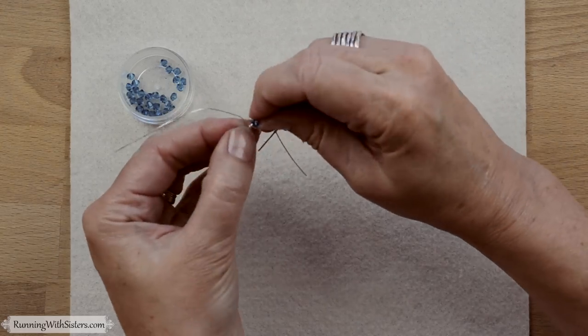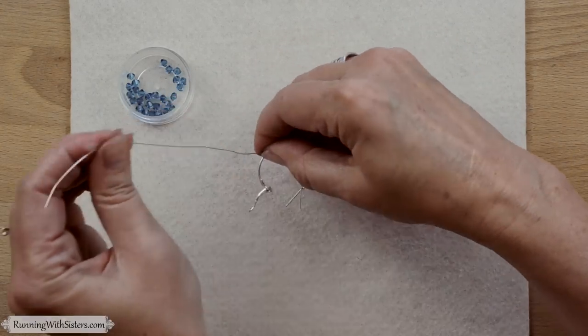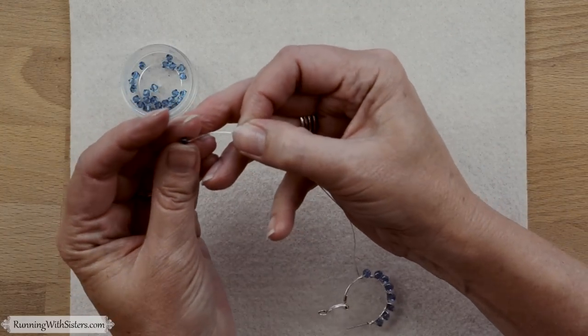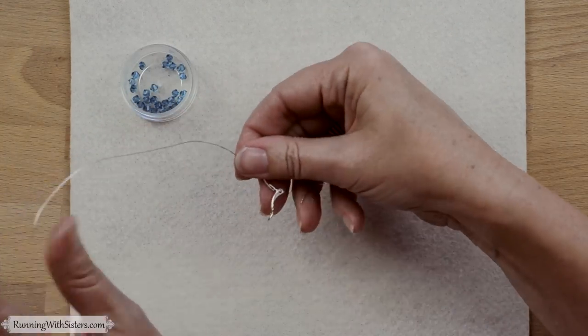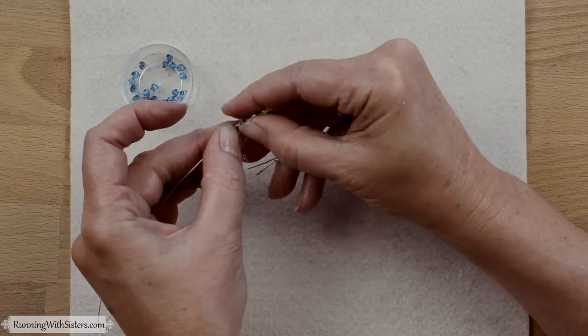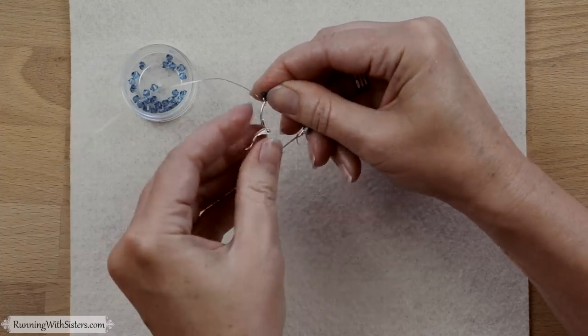You can mix up the colors of the metal. You could do copper, you could do silver, you could do gold, and then you can mix up all the colors of the Swarovski crystals. They're so pretty. And these Swarovski crystals you can get at your local bead store, or at any craft store. Just about any craft store.